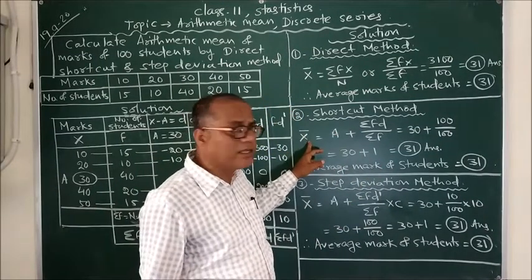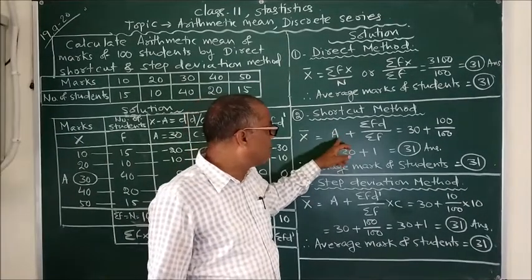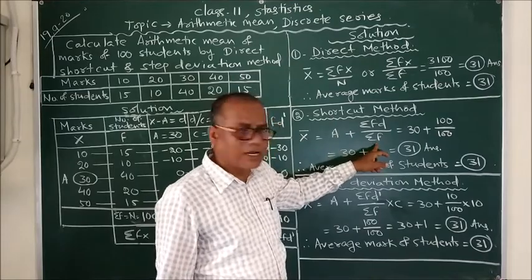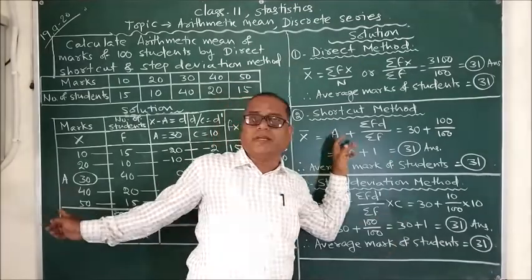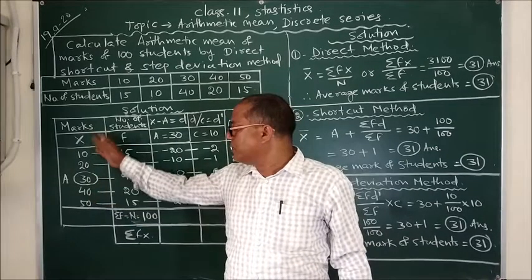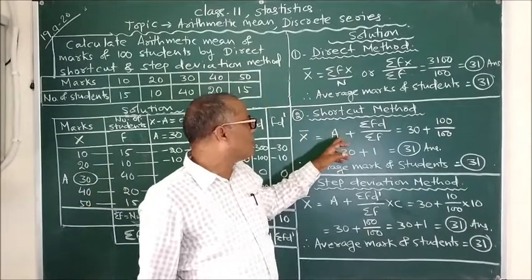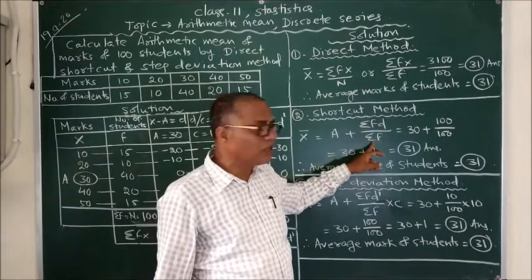Come to shortcut method. Here the formula used is x bar equals a plus summation fd upon summation f, where a is the assumed mean. In this series we have taken 30 to be the assumed mean.